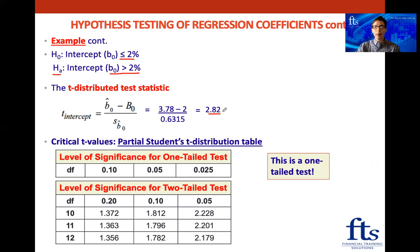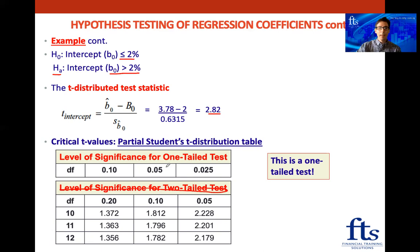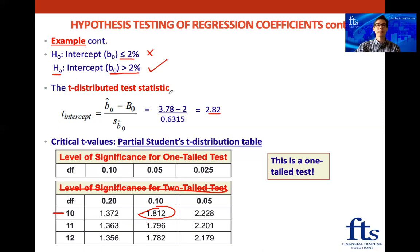Now we compare to our critical value. This is a one-tailed test because we want to support that the intercept is greater than 2%. So we use the one-tail row in the t-table. At a 5% significance level with 10 degrees of freedom (12 observations minus 2), we get our critical value. Our test statistic of 2.82 exceeds our critical value, so we can reject the null hypothesis and support the alternative that the intercept of 3.78 is significantly greater than 2%.